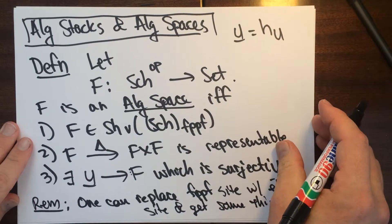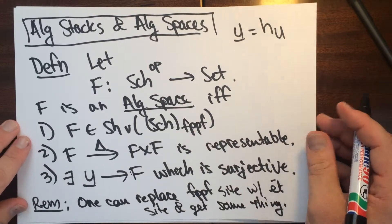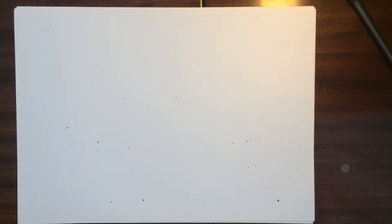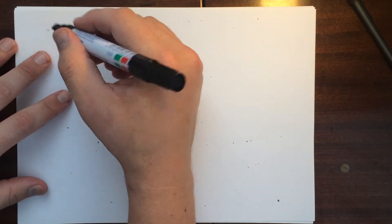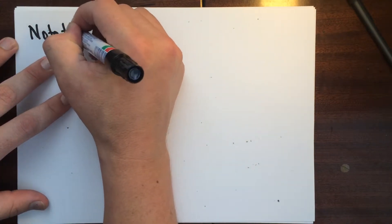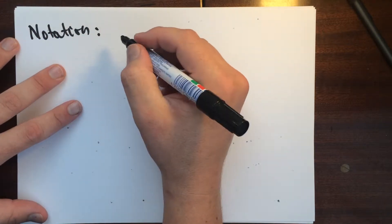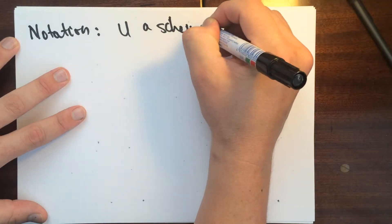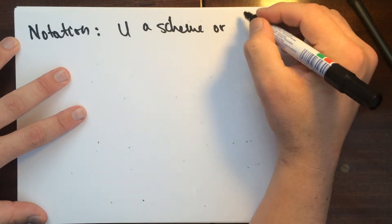Okay, so that's what an algebraic space is. Okay, so now I'm going to tell you what the definition of a stack is. So first I need some notation. For U a scheme.